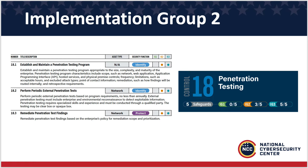A lot of organizations have a penetration test done, get the report and results, say they know what they need to do and feel they have a good amount of risk tolerance — and then six months later they get attacked through one of the methods their penetration test found. So having a policy in place for how fast you have to remediate and how much of those penetration test gaps need to be remediated within that period of time is critical.